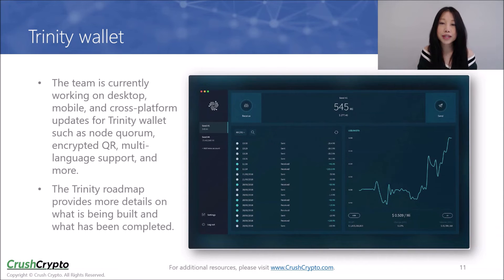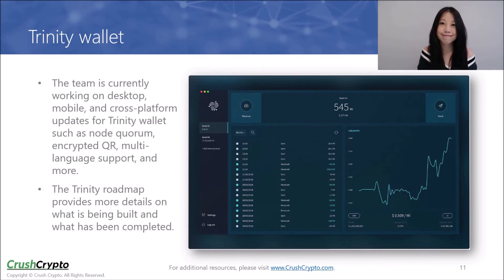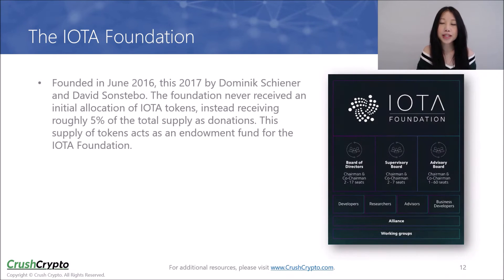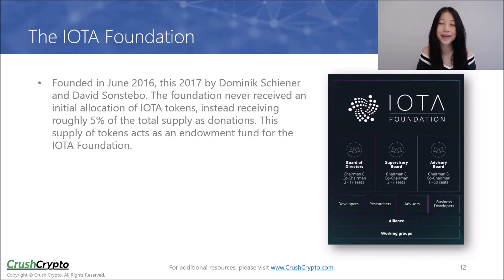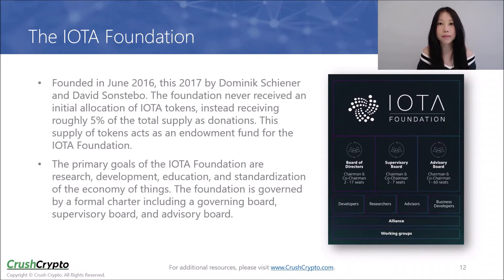Check out the Trinity Roadmap for more details on what is being built and what has been completed. If you are interested in checking out general updates on the protocol and ecosystem, stay tuned to the IOTA blog for the most up-to-date information. While the IOTA protocol was founded in June 2016, the non-profit IOTA Foundation was established in Germany in 2017. The foundation never received an initial allocation of IOTA tokens — instead, they received roughly 5% of the total supply from donations. This supply of tokens acts as an endowment fund for the IOTA Foundation. The primary goals of the foundation are research, development, education, and standardization of the economy of things.